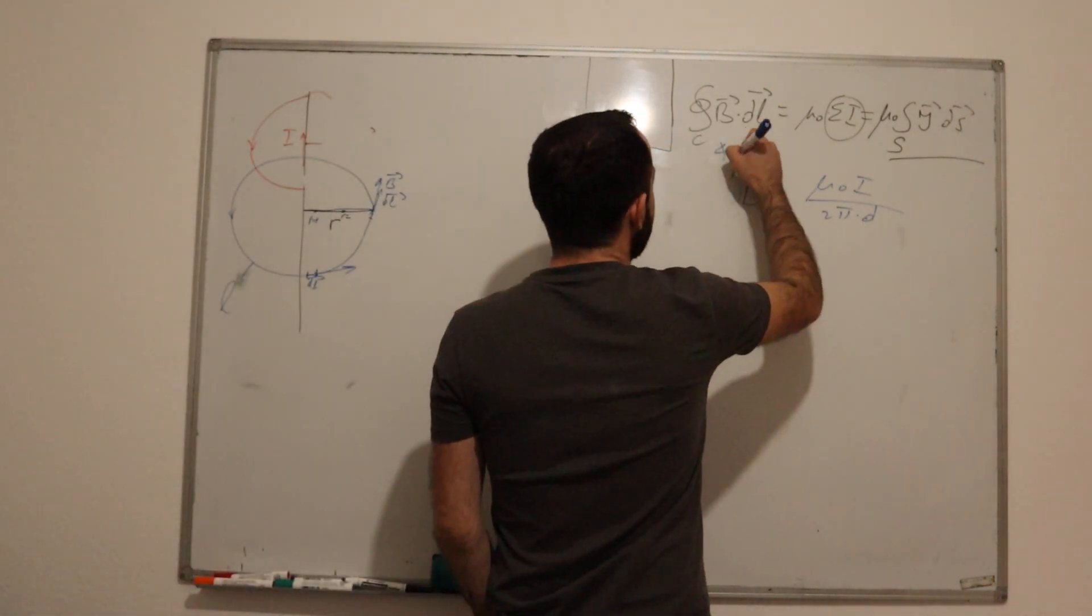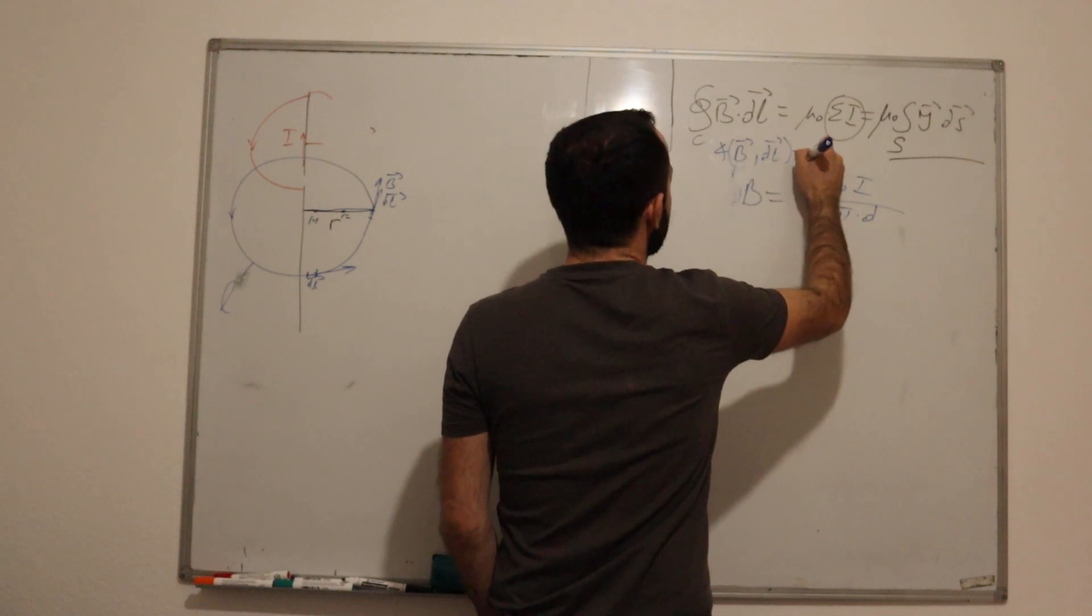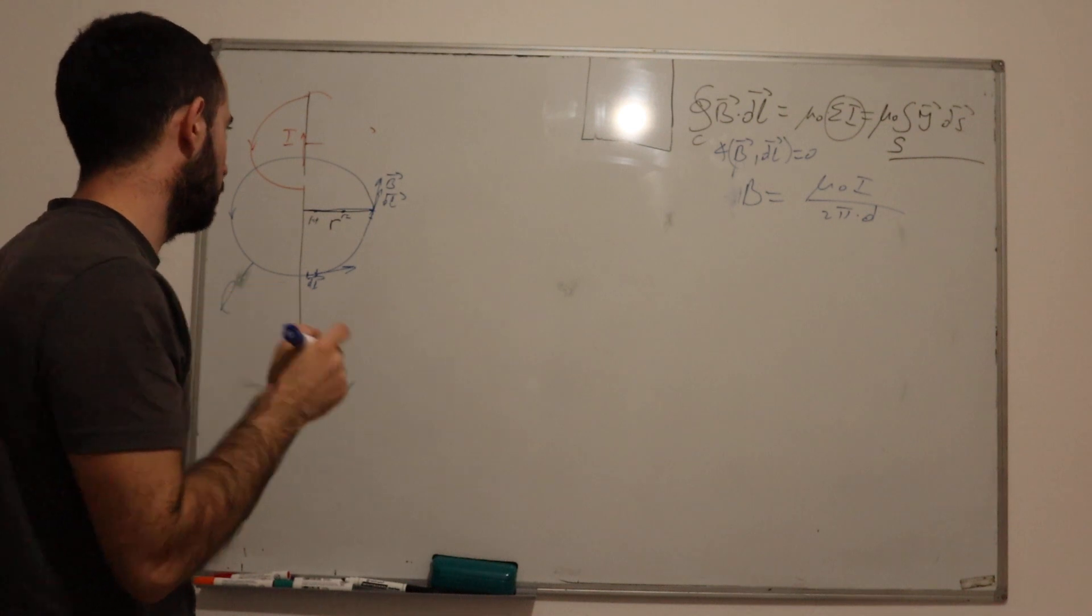So the angle between B and dL is equal to zero. Why is this important?